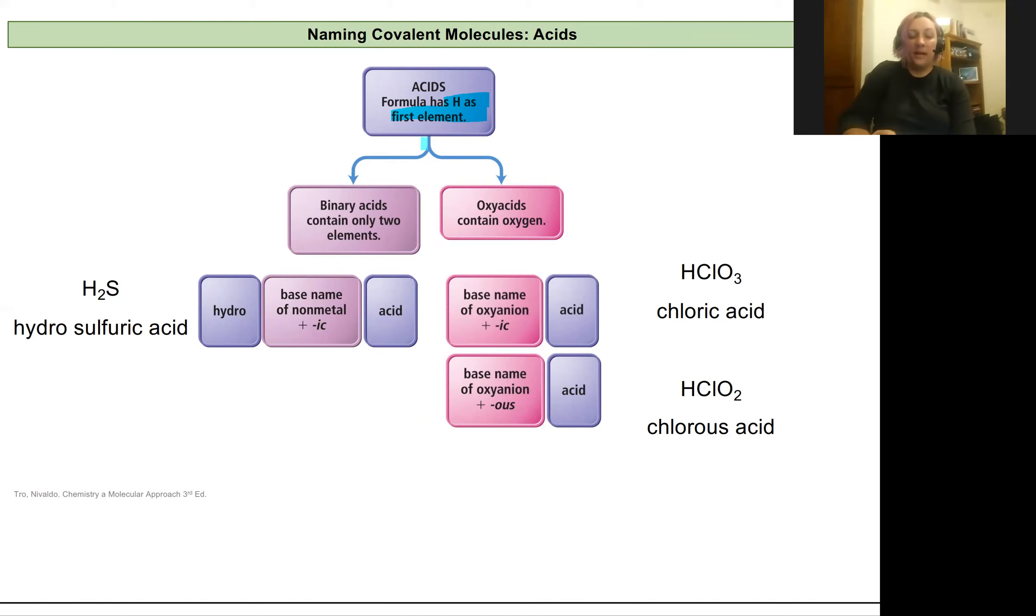We're going to cover binary acids and oxy acids. Let's look at binary acids first. These contain only two elements. One example is H2S. Other examples would be HCl, HF, HBr.